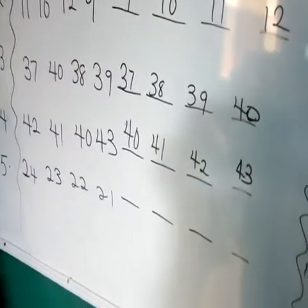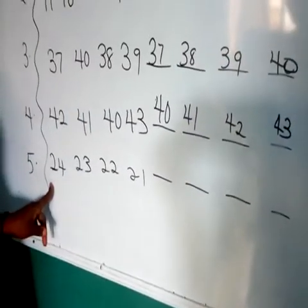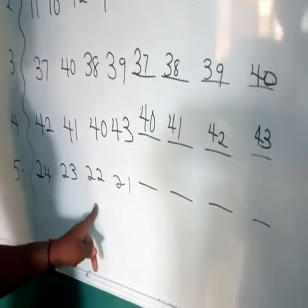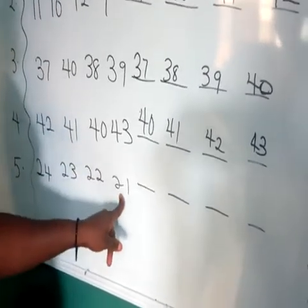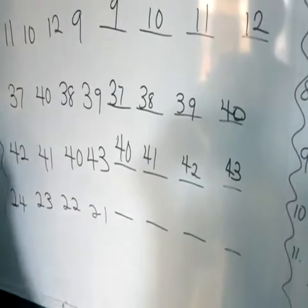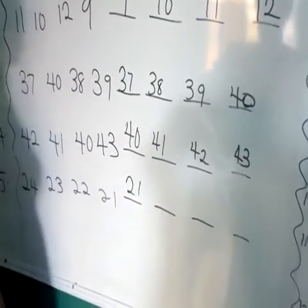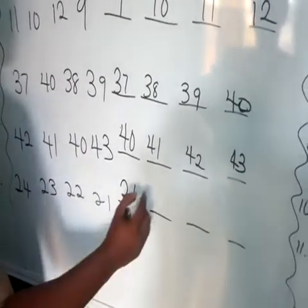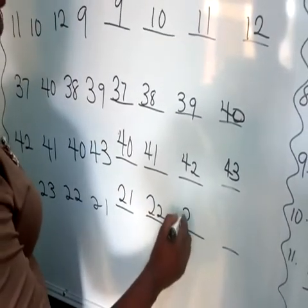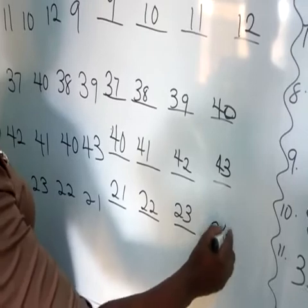Number 5: we have 24, 24, 22, and 21. Which one comes first? We have 21 as our first number. Let's go: 2 and 1 is 21, 2 and 2 is 22, 2 and 3 is 23, 2 and 4 is 24.